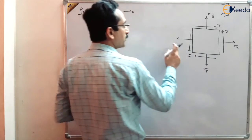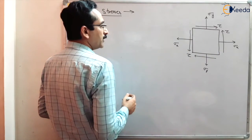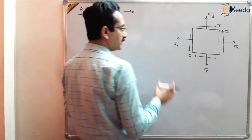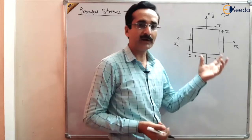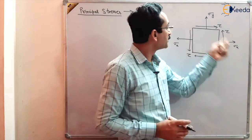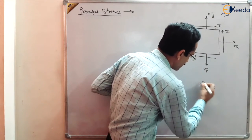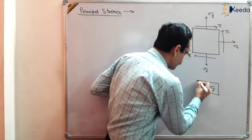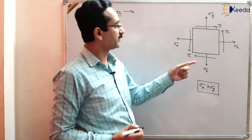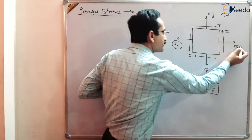So we have applied normal stresses Sigma X and Sigma Y, and we have applied Shear Stresses. Suppose this element is weak in normal stresses — tensile or compressive. Sigma X is higher than Sigma Y, both are tensile, so Sigma X is greater than Sigma Y. One might think that the element will fail due to Sigma X.